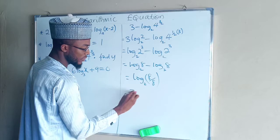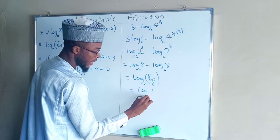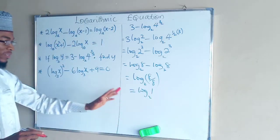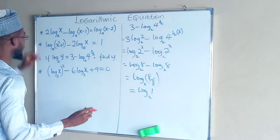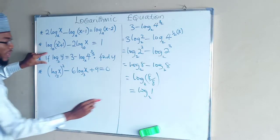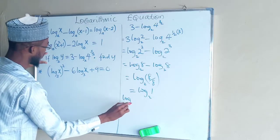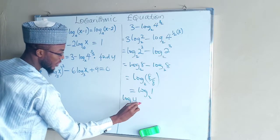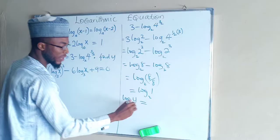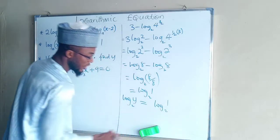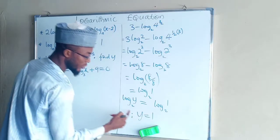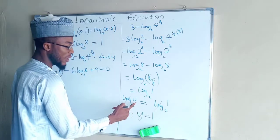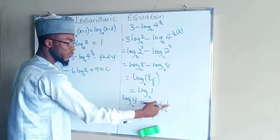And this equals log 1 base 2 from the right hand side. And what is on the left hand side is equal to what is on the right hand side. From the left hand side we have log y base 2, and from the right hand side we have log 1 base 2. So therefore y equals 1, because this can cancel. We end up having y equals 1.